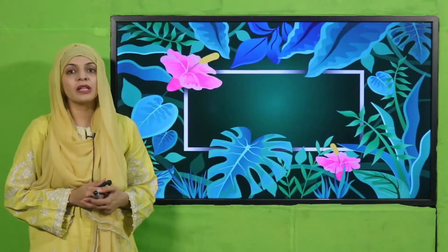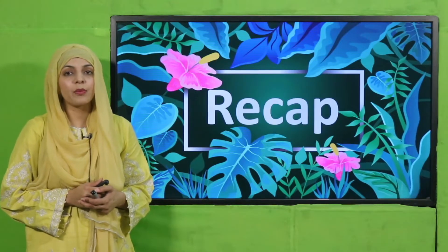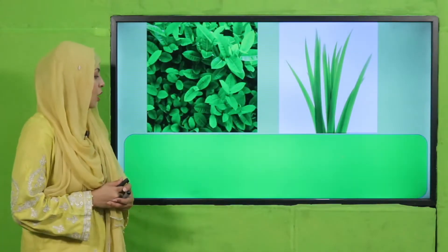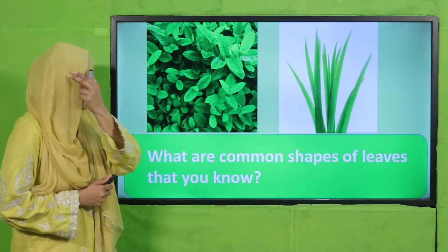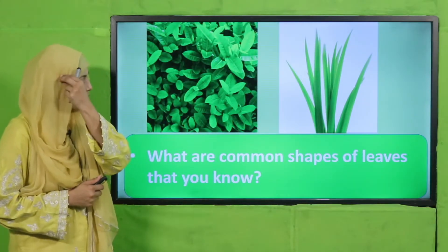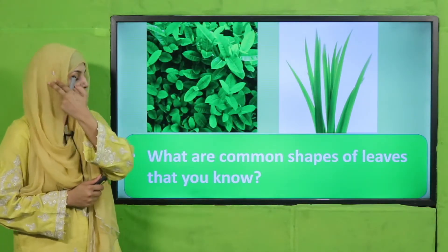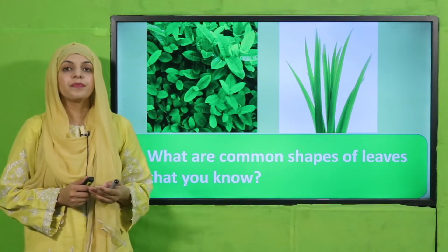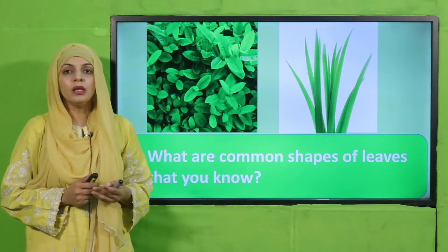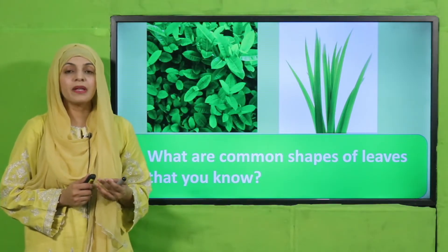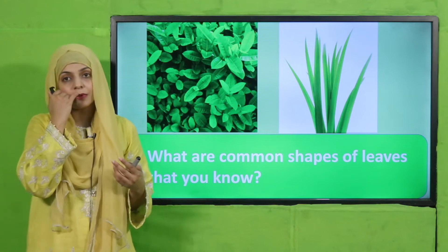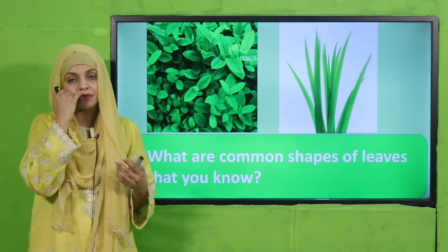My dear students, let's quickly recap what we did in the previous lecture. Listen to the questions very carefully and then answer. Quickly tell me what are the common shapes of leaves that you know. Needle, oblong, oval, heart-shaped, kidney shape — these are all the different types of shapes of leaves.